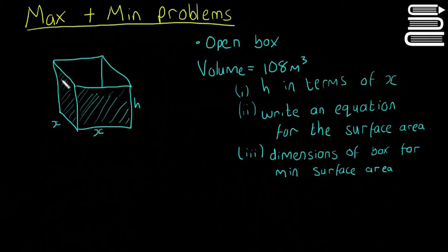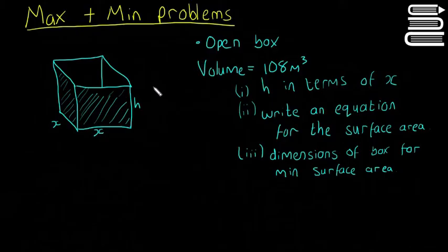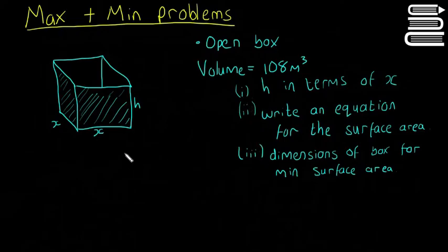In this video we're going to look at another maximum and minimum problem, kind of a real life solution. We're going to follow the same four steps as we did last time, except because the question is asking us different things at different times, we're not actually going to follow them in order — just the way the question is laid out. But it's still always the same four steps.